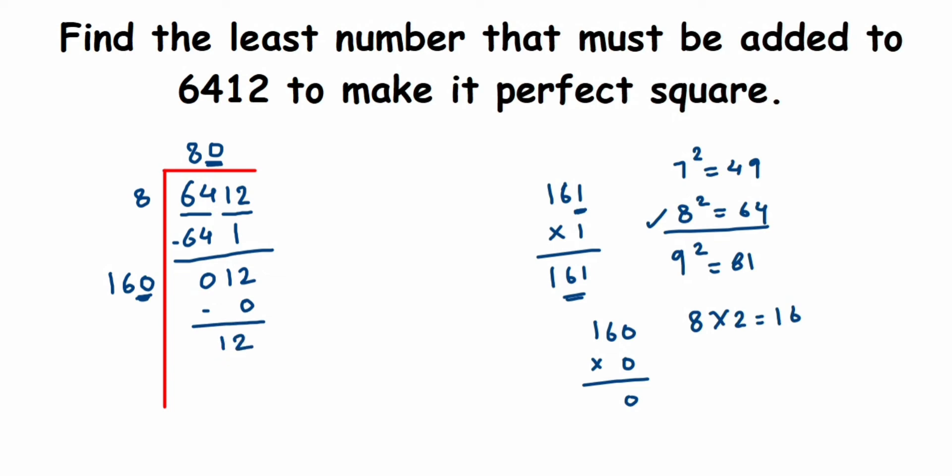Let's subtract it. We got again 12. Now we're getting a remainder 12. It means this number is not a perfect square. Less than this number is 80 square, which is a perfect square.